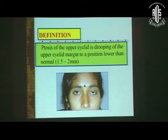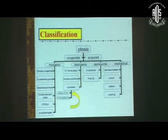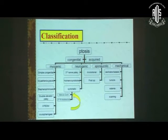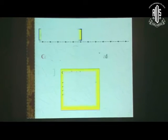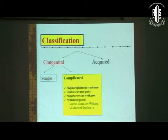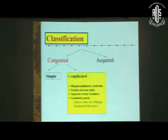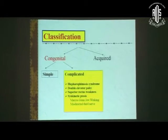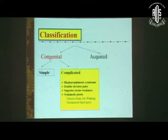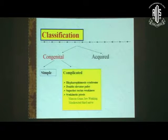As you can see in this photo, left eye ptosis is there. Ptosis can be divided into congenital or acquired, and the congenital variant can be further classified into either simple ptosis or complicated — if there is association with blepharophimosis, double elevator palsy, superior rectus weakness, or a synkinetic ptosis.